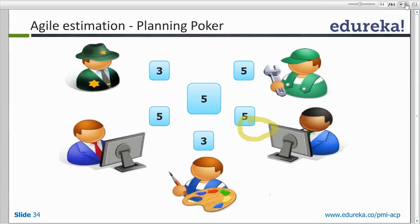And why would the Scrum master be there? He knows the processes about Agile, so he can take care of things. He would guide the team and would not let them deviate from Agile.